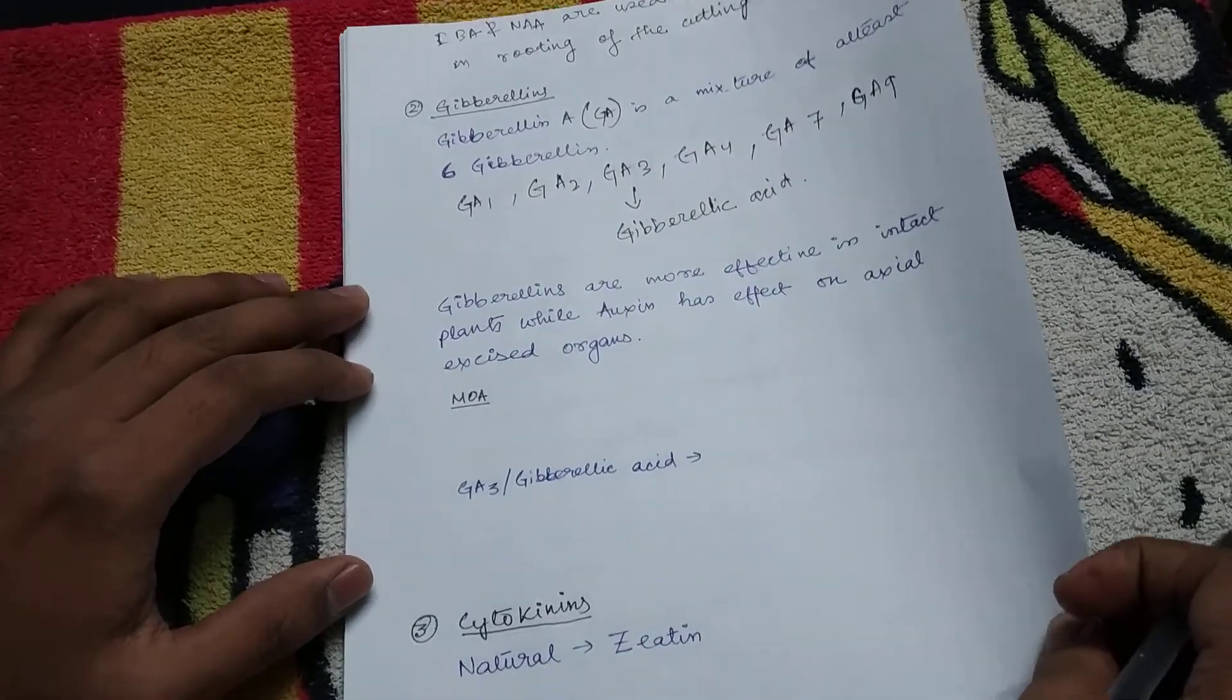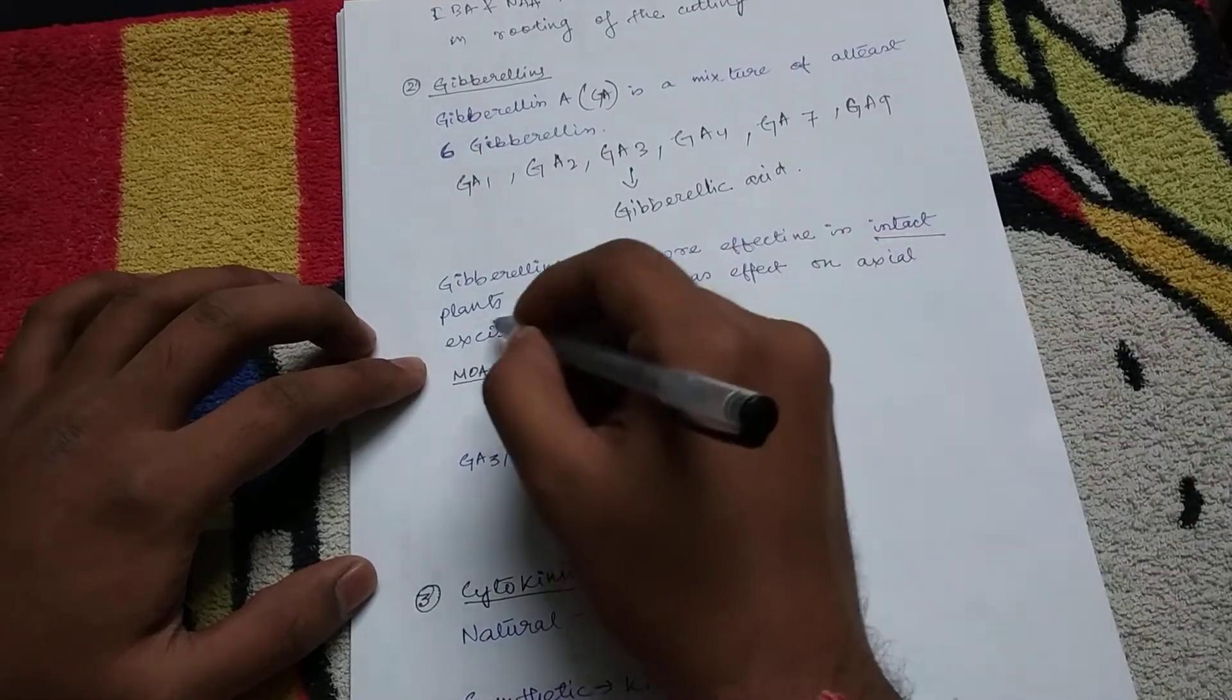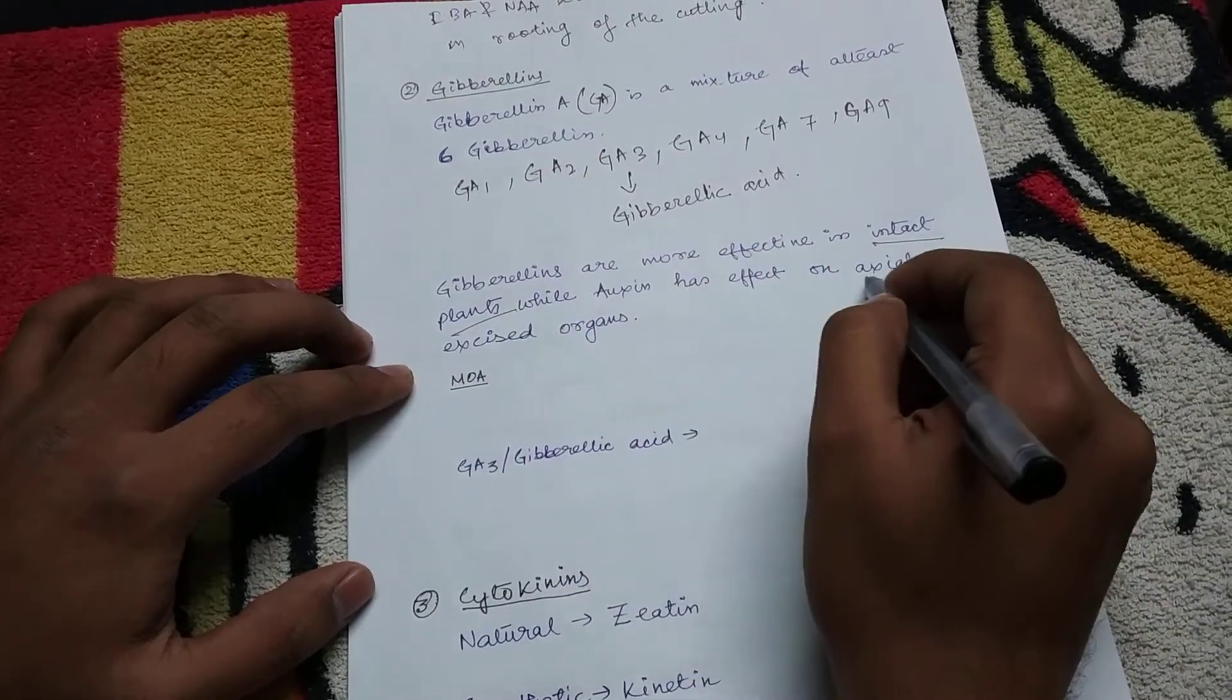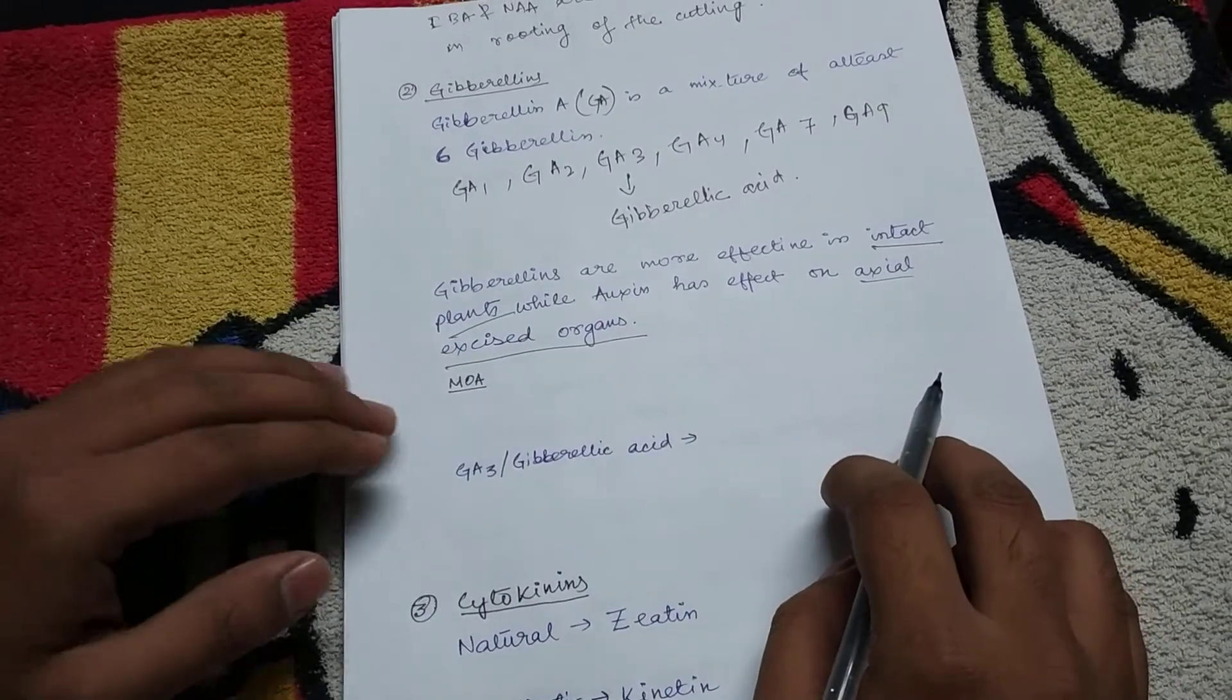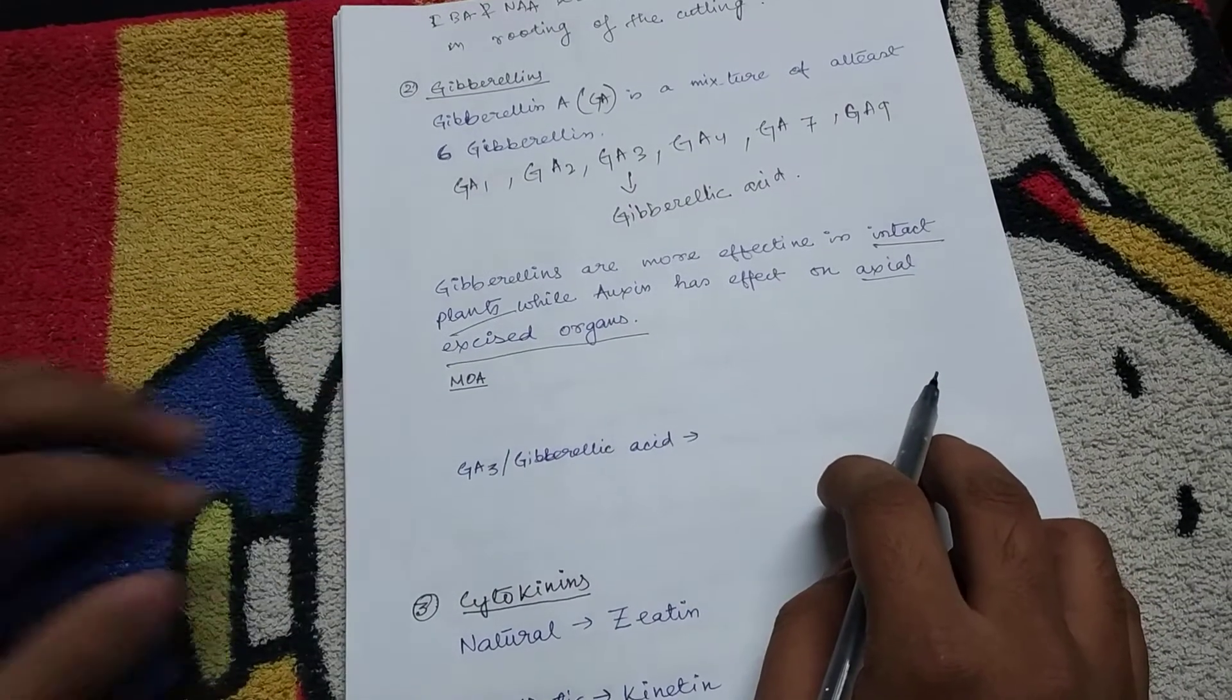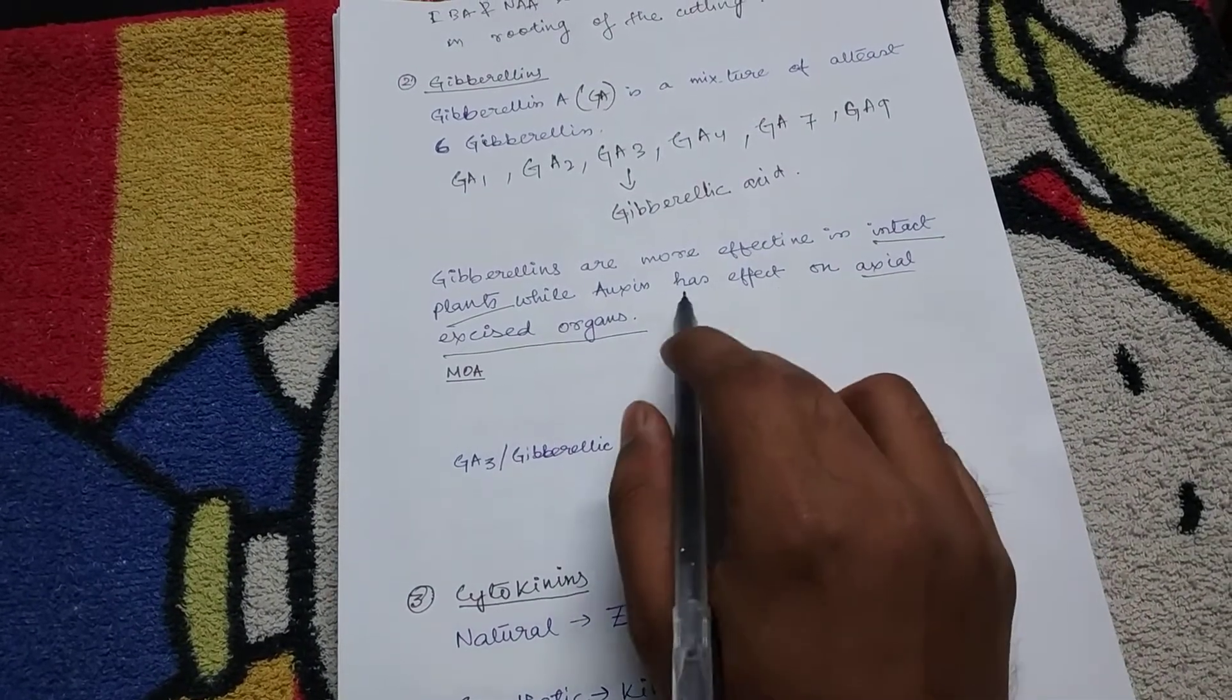Now gibberellins are more effective in intact plants, while auxin has effect on the excised organs. So when the plant is cut and tissue cultured, auxin is more effective than gibberellins.